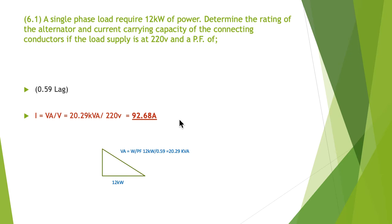And we do the whole thing again. And of course we've got to work out the VA first. So again the VA is going to be the power in watts divided by the power factor. And in this case 12 divided by 0.59 giving us 20.29 kVA. So our 20.29 divided by 220 is going to give us current of 92.68 amps. So there's our three currents.